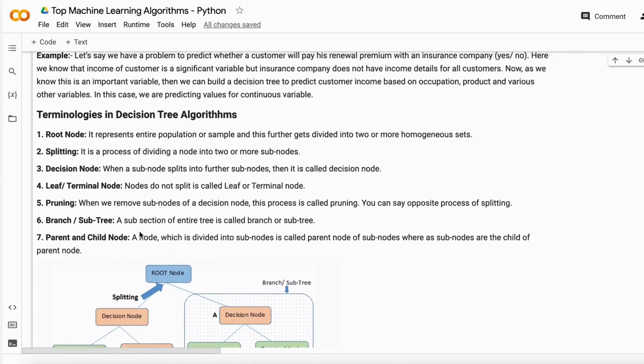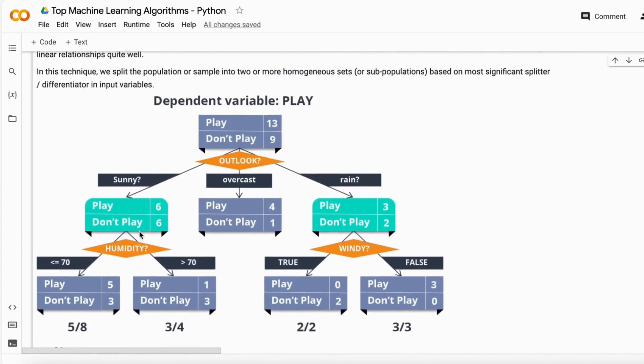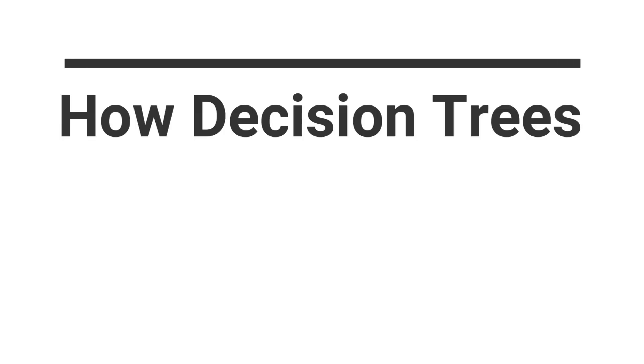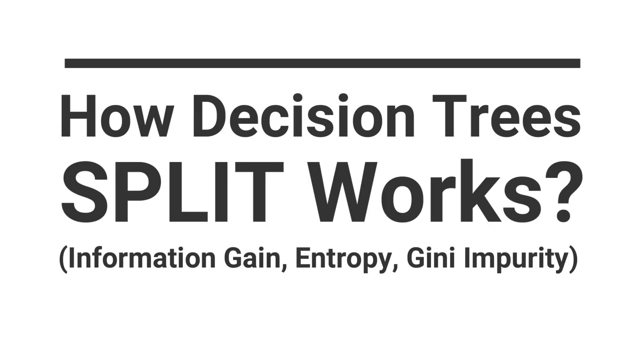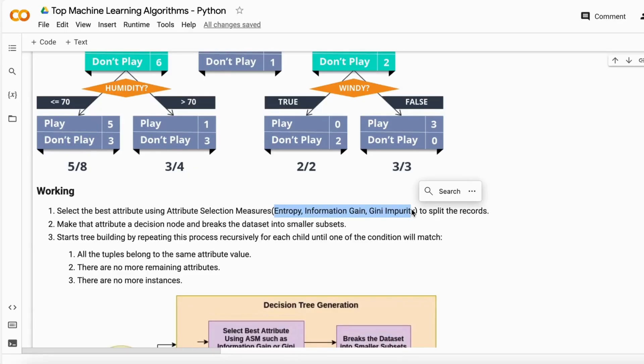So we will meet in our next video in which I explain how decision trees actually splits the data on the base of entropy, information gain and Gini impurity with mathematics and all the examples we have. And we'll be able to build the decision tree as well. And guys, thank you so much. We'll meet in our next video for sure.